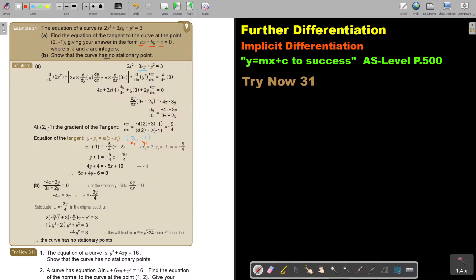Now show that the curve has no stationary points. So I take the differentiated equation and put it equal to 0. Put it over 1, and if you cross multiply, you will find negative 4x minus 3y equals 0. Then if you take it over, you will get this.